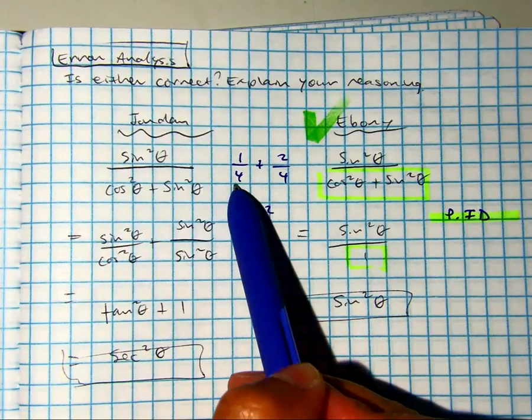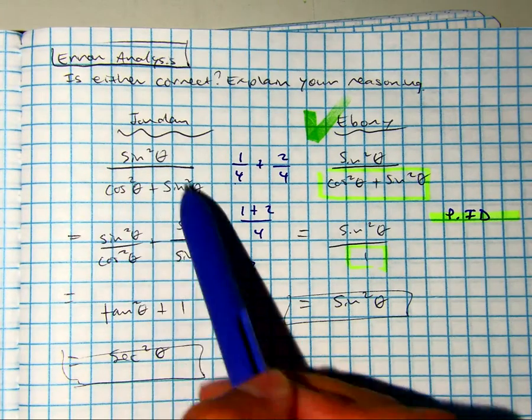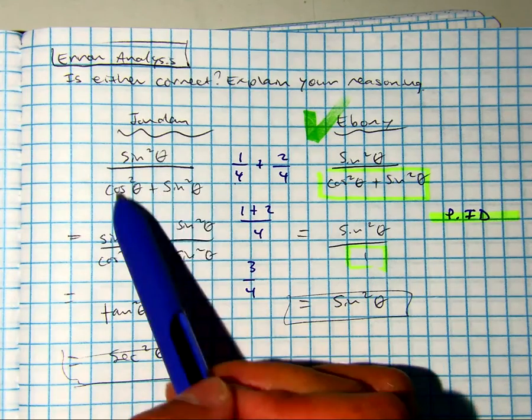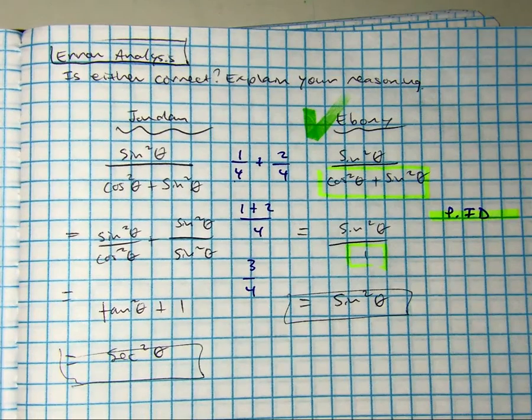4 would be a common denominator, so if that was true, you can split the numerator, but you would have to keep the denominator. So, going from this step to this step would be incorrect.